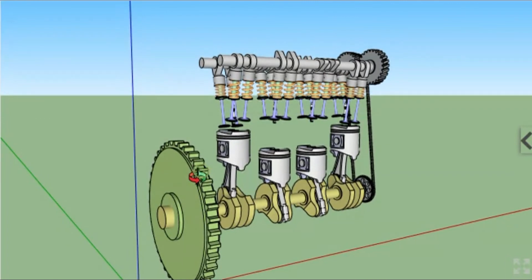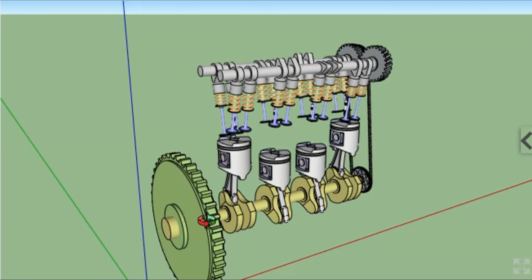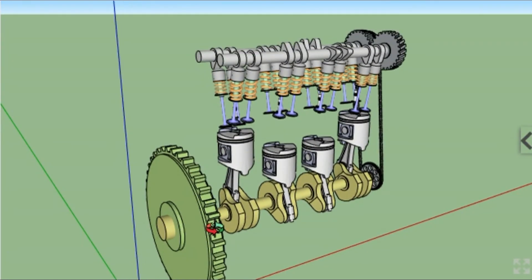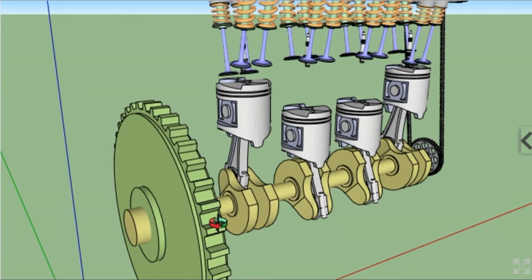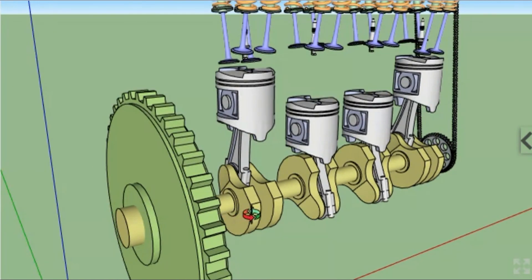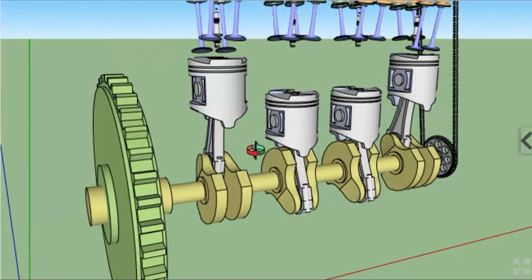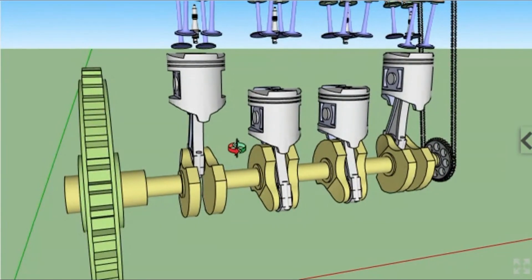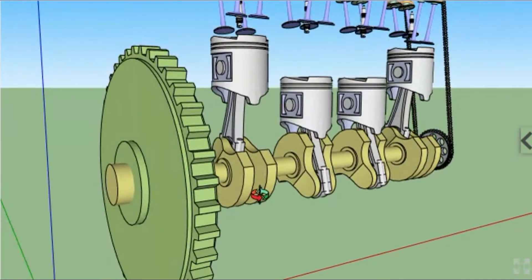The last part is the flywheel, which is secured on the crankshaft. The main function of the flywheel is to rotate the shaft during preparatory strokes. It also makes crankshaft rotation more uniform.